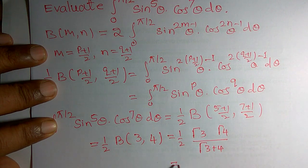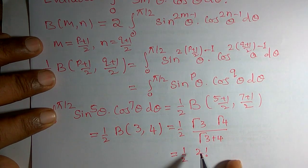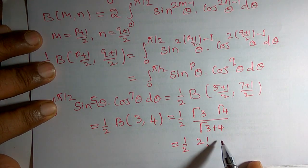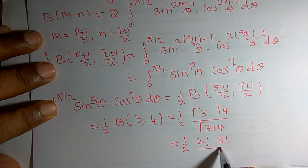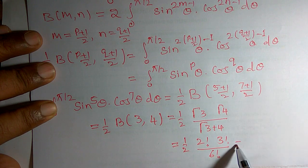This can be written as 1 by 2 times gamma of 3 means 2 factorial, and gamma of 4 means 3 factorial. Gamma of 7 means 6 factorial.